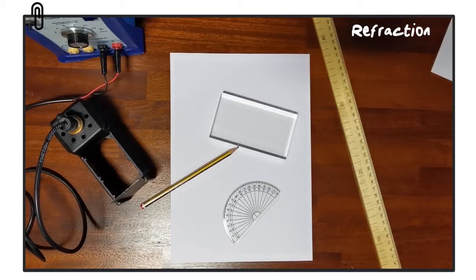Hi folks, in this GCSE prescribed practical we want to try and determine if there's any relationship between the angle of incidence and the angle of refraction. In order to do that, we are going to need to measure the angle of refraction for a range of angles of incidence.